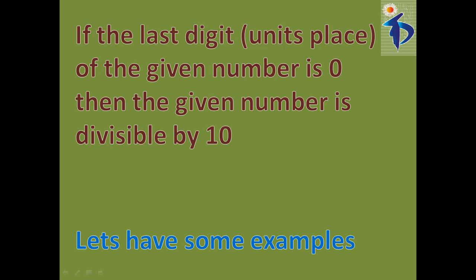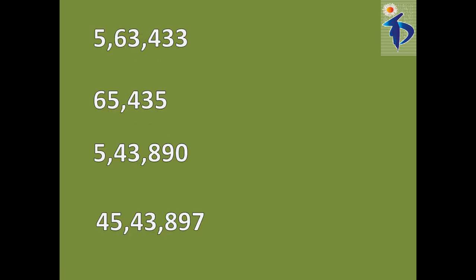Let's have some examples. The first number is 563,433. The unit digit is not 0, so this number is not divisible by 10. The next number is 65,435. Here also the unit digit is not 0, so this number is also not divisible by 10.